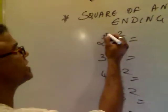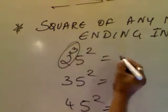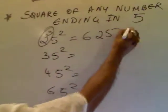After 2 comes the next digit, 3. 2 times 3 is 6. 5 square is 25. Answer is 625.